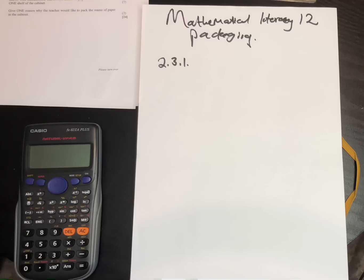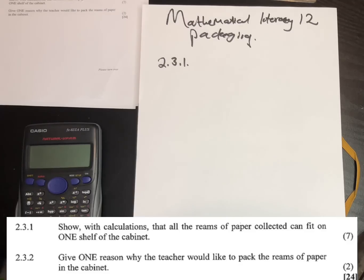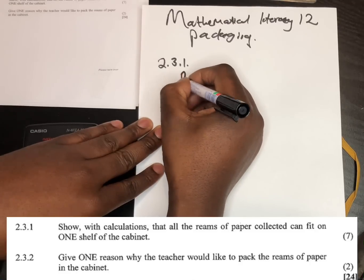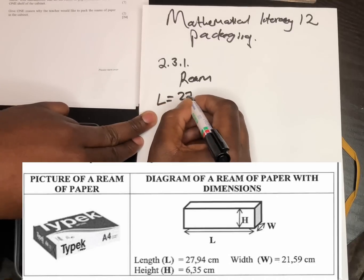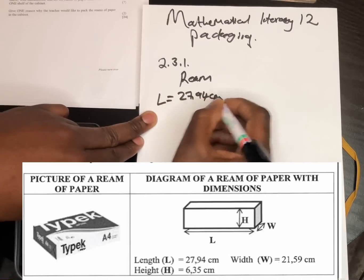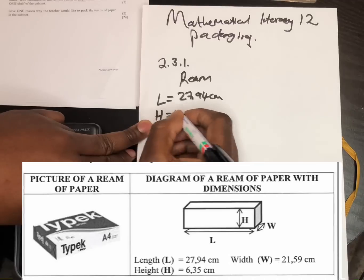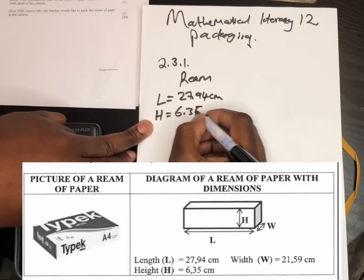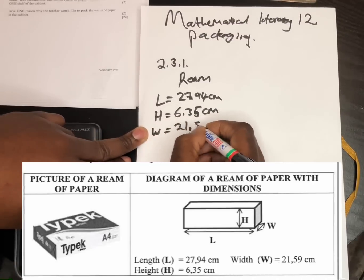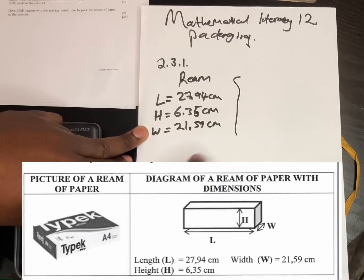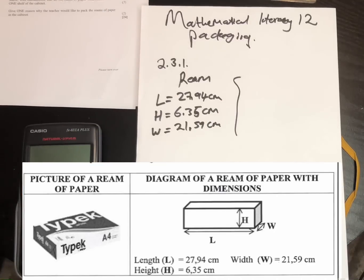The key word in packaging is that the measurements of the given information must be the same. You cannot package things as long as the measurements are not the same. Let's write down the measurements of the ream: the length is 27.94 centimeters, the height is 6.35 centimeters, and the width is 21.59 centimeters.